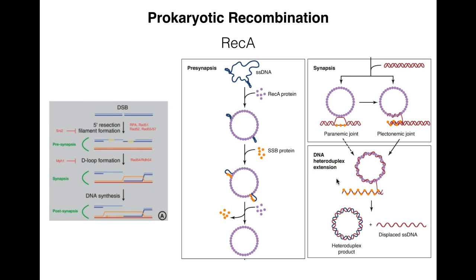Post-synapsis, also known as heteroduplex extension, is characterized by local denaturation of the double-stranded DNA, allowing the annealing of complementary single-stranded DNA until linear DNA is created. The heteroduplex extension isn't perfectly matched — we might have a few base-pair mismatches. REC-A helps especially with the synapsis step in creating peranemic and plectinemic joints and with extending the heteroduplex.